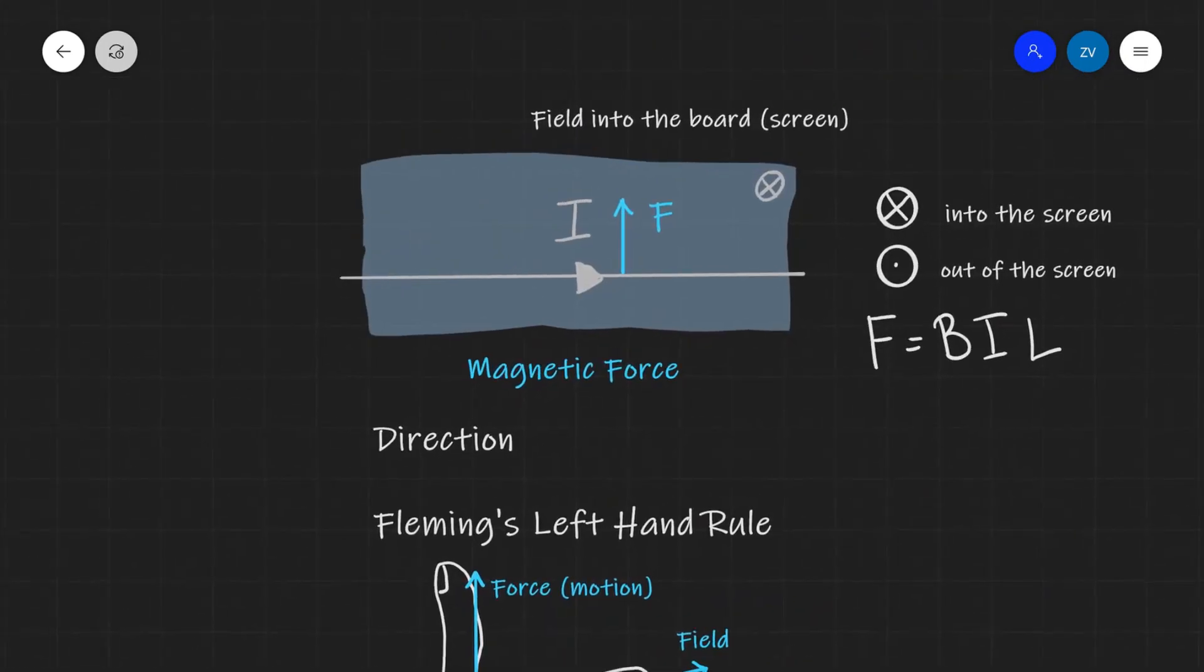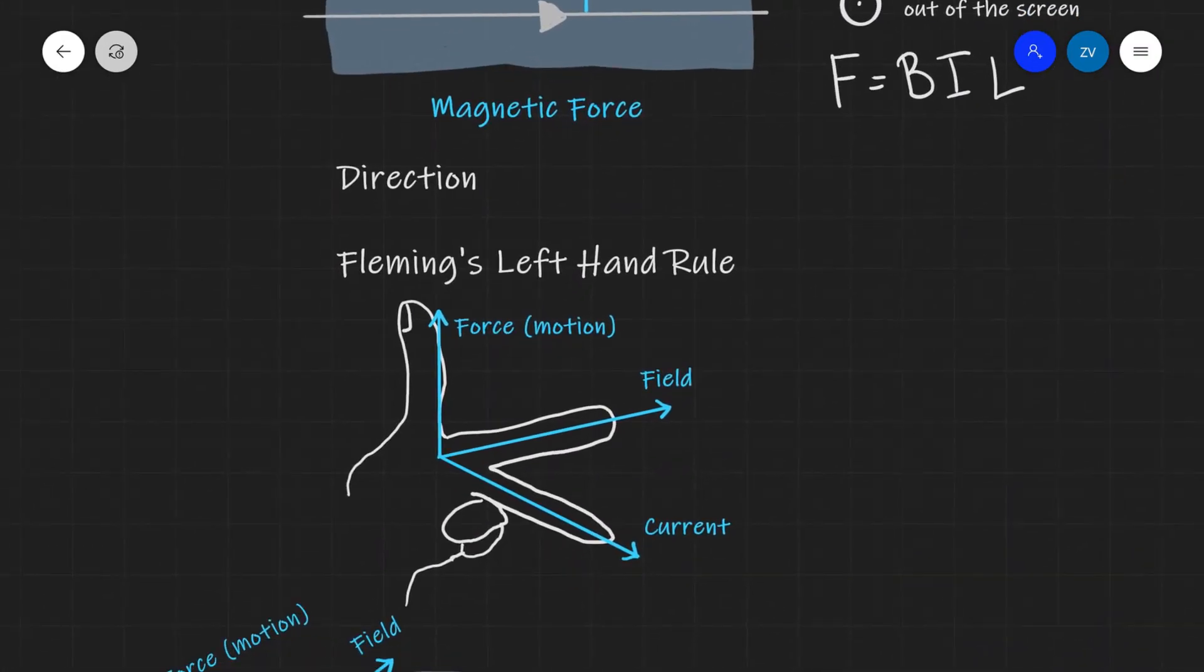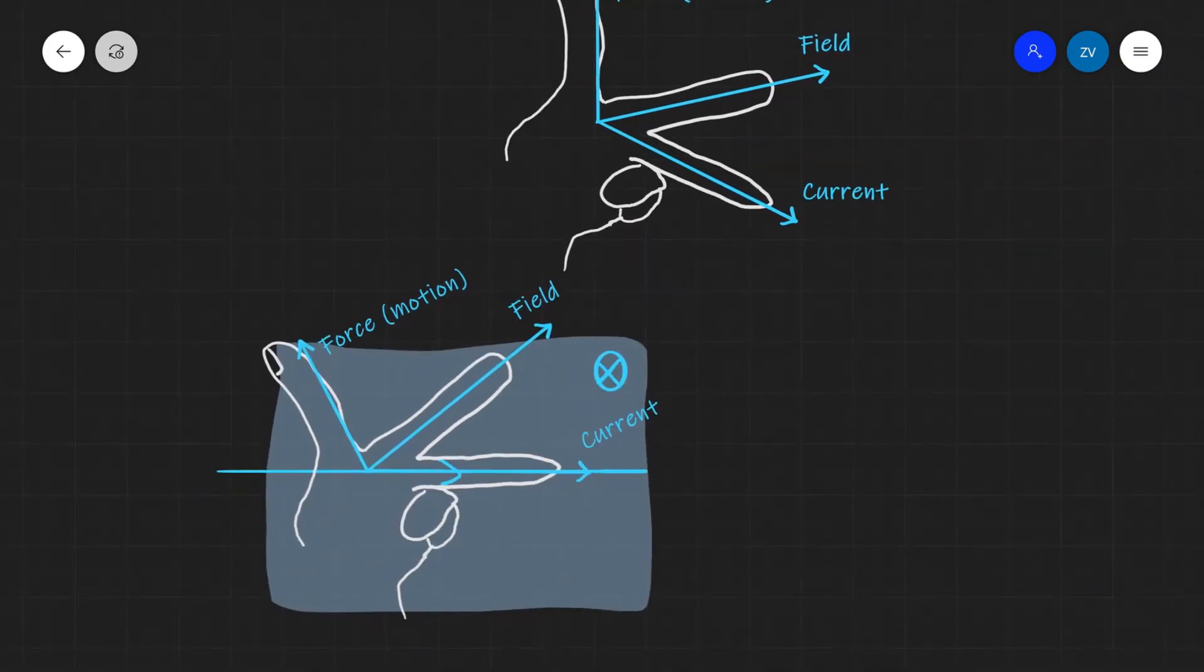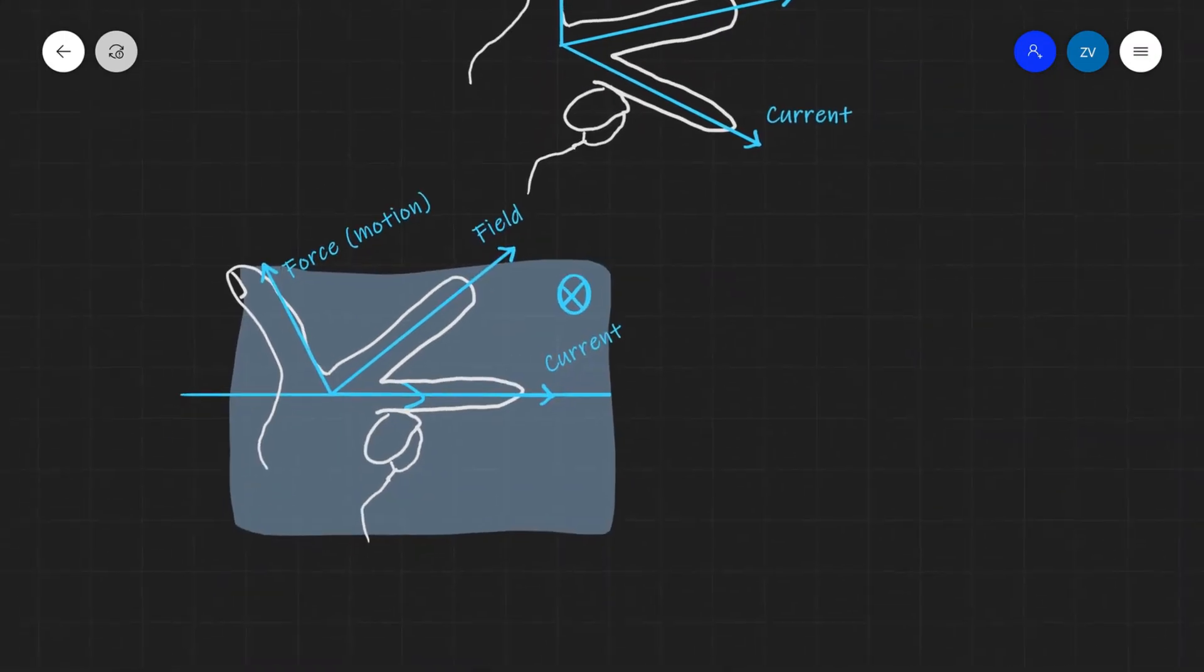Just up here, I told you that if we have a current which is going to the right and the field is going into the screen, then the force on the wire will be upwards. It will be a challenge for me to try and explain this in two dimensions, whereas this really is a three-dimensional problem. So one upwards, one in and out of the board, and another one, let's say, left or right. So those are the three dimensions. But let's try.